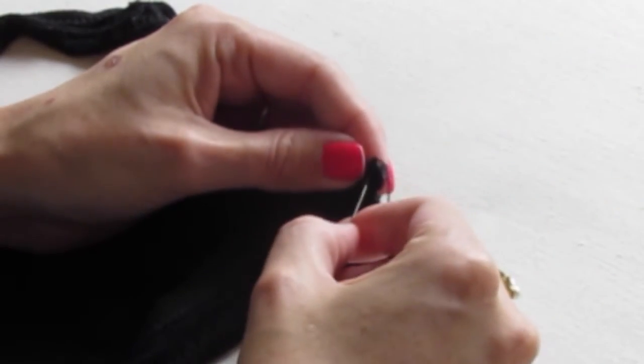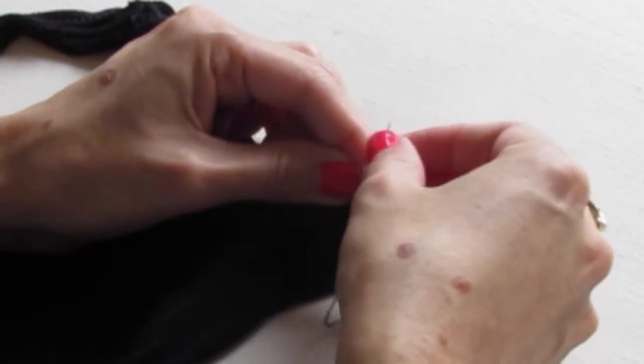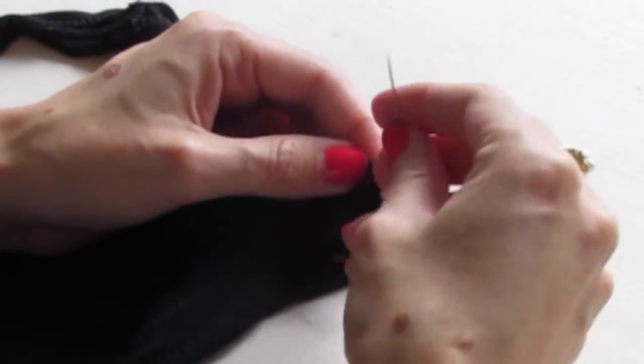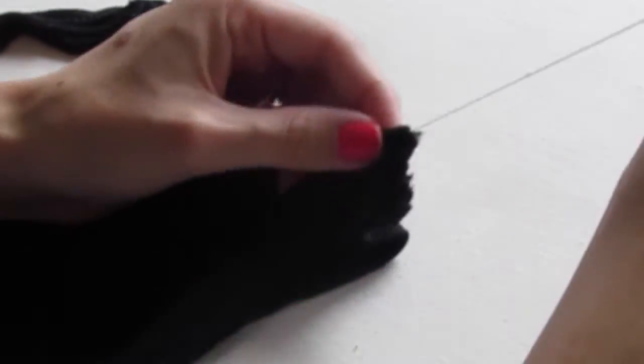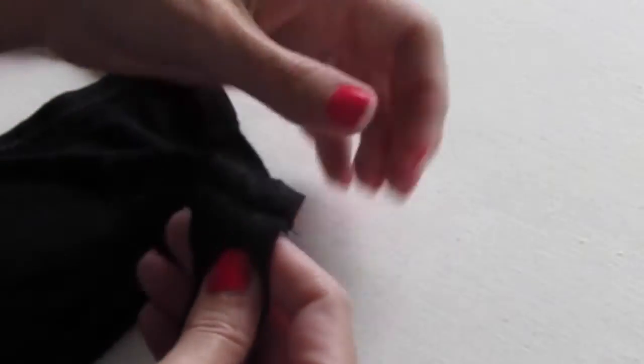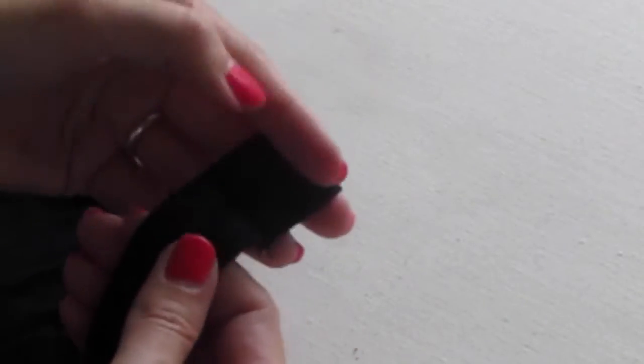So just again, go through that loop, needle through the loop, pull it tight, and you're done. I can cut your thread off. And when you turn your tank top back right side out, it's all sewed together again.